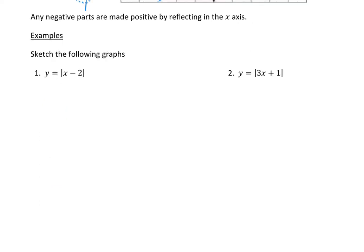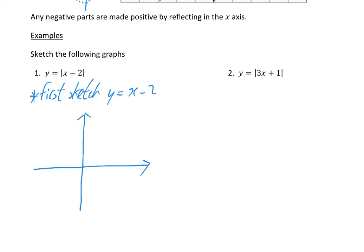This example says sketch the following graphs: y is equal to the modulus of x minus 2. The first thing to do is to sketch y is equal to x minus 2. Any bits that are underneath the axes, I'm going to draw as a dashed line. y equals x minus 2 has a gradient of 1 and the intercept is minus 2, so it crosses at minus 2. It then crosses at 2 and goes up — that's what y is equal to x minus 2 looks like.